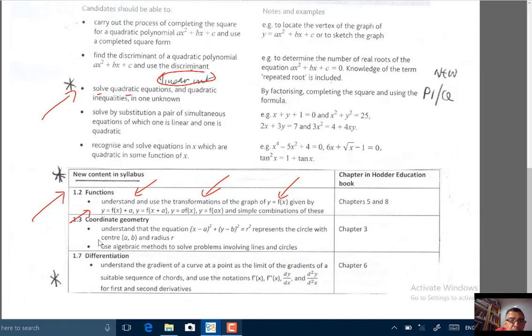In 1.3 coordinate geometry, we have to deal with circles now. We have to understand that the equation (x - a)² + (y - b)² = r² represents the circle with center (a, b) and radius r.